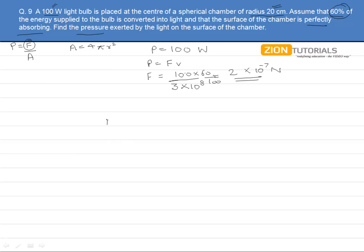So it is quite simple to calculate the pressure - it will be simply force upon area. Putting in the values, we get 2×10⁻⁷ upon 4×3.14×(0.2)², giving us a value of 3.9×10⁻⁷. Or we can say it is approximately 4×10⁻⁷ newton per meter squared.